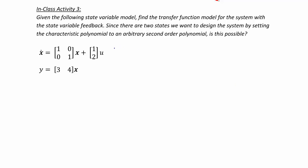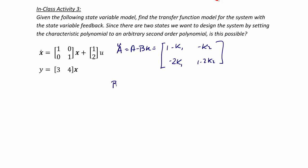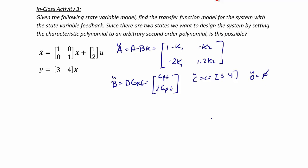The first thing we do is find A-tilde equal to A minus BK. Skipping some steps, that equals [1 minus K1, negative K2; negative 2K1, 1 minus 2K2]. B-tilde equals B·GPF, which is [GPF; 2·GPF]. C-tilde equals C, which is [3, 4], and D-tilde is 0.